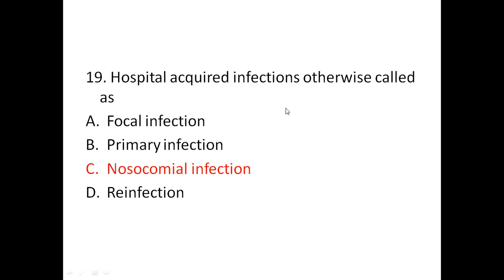Nineteenth question: hospital-acquired infections are otherwise called? Options are focal infection, primary infection, nosocomial infection, or reinfection. The answer is nosocomial infection. Hospital-acquired infections are infections which develop in patients after admission to the hospital. These infections were neither present nor in the incubation period at the time of hospitalization.